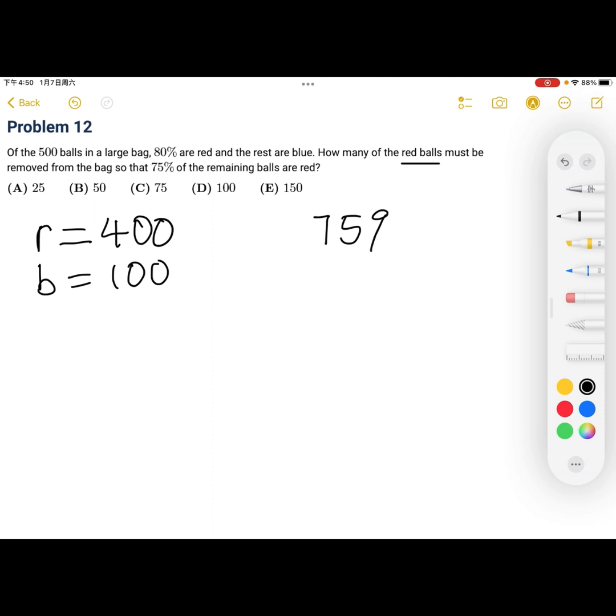which I'm going to say is x. So that means 25% of this new total x is going to be equal to blue. And then since we're not changing blue, that means blue is equal to 100.